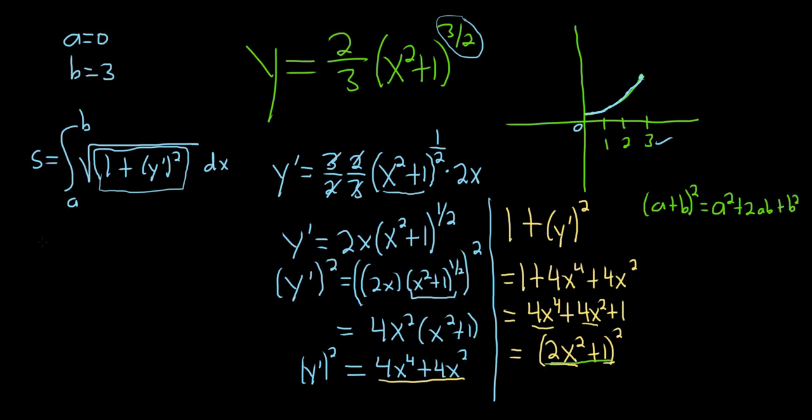Let's go back to our formula now. So s is equal to, we said a was 0, that comes from the picture. Likewise b is 3, that also comes from the picture. It's the x values left to right. And then we have the square root of, and we have this 2x squared plus 1 quantity squared. Beautiful stuff.